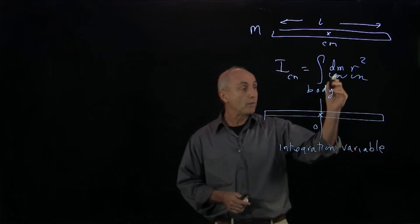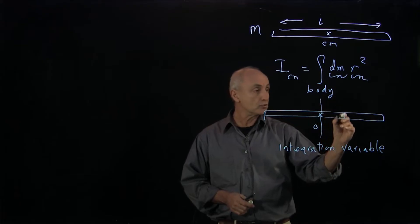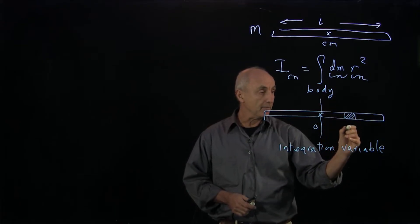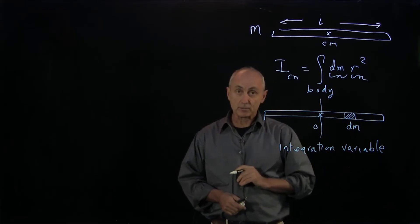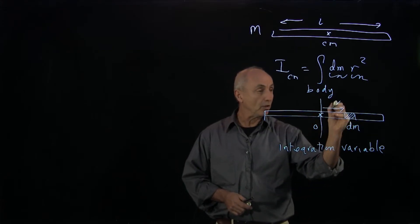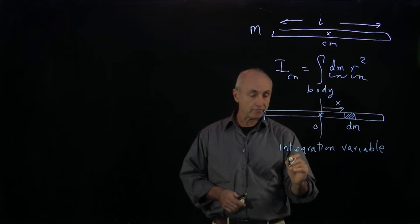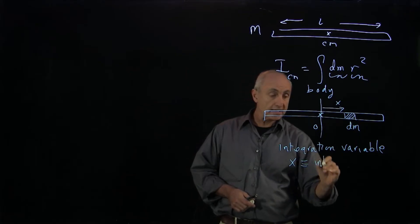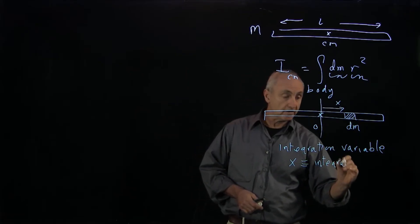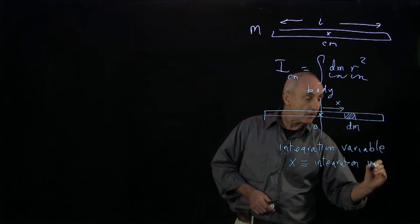What we want to do is arbitrarily choose an element dm. There's our element dm, and here's our integration variable: a distance x from the origin. That's the integration variable.